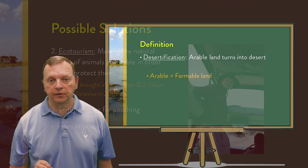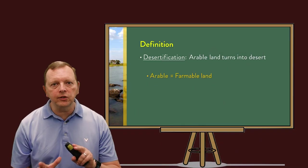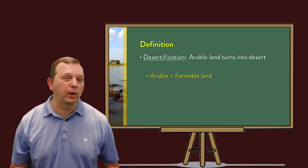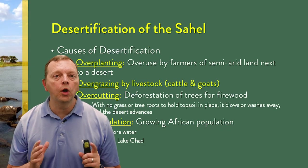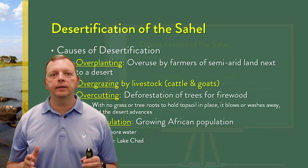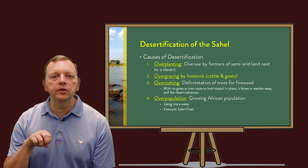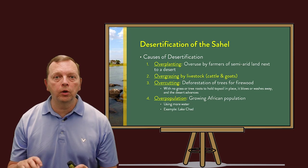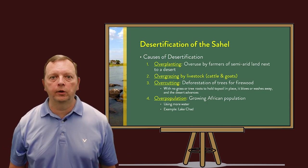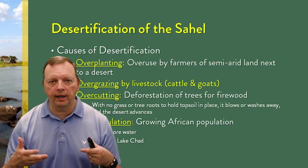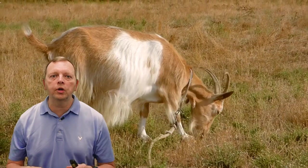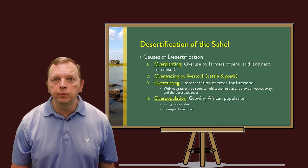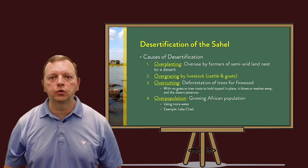Another environmental problem in Africa is desertification — when arable land, land that you can farm on, is becoming a desert. There are four major reasons that cause desertification, what I call the four overs. The first is over-planting: when farmers do not use crop rotation or other techniques, the plants strip the nutrients out of the ground, and soon the ground cannot support any plants or crops. Without plants, the roots no longer hold the soil together, and wind erosion picks up the soil and carries it away. The second reason is over-grazing by livestock. If livestock such as cows or goats are allowed in the same area too long, they will eat up all the plants — no plants means no roots, and the wind erosion will take the soil away.